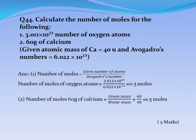Question No. 44: Calculate the number of moles for the following: 1. 3.011×10²³ atoms of oxygen. 2. 60 grams of calcium. Given: atomic mass of calcium = 40U, Avogadro's number = 6.022×10²³. Answer 1: Number of moles = 3.011×10²³ ÷ 6.022×10²³ = 0.5 moles. Answer 2: Number of moles of calcium = given mass ÷ molar mass = 60 ÷ 40 = 1.5 moles.